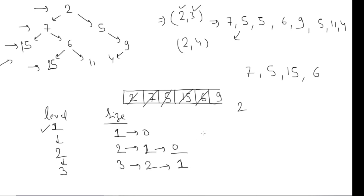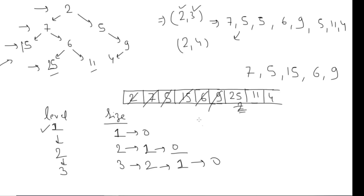Six has both left and right children, so I add twenty-five and eleven to the queue. Then I check nine — it's at a permissible level — I reduce the size, and nine has a left child so I add it to the queue. Now size is zero, so I increment the level. The new level is now greater than the maximum level of three, so I exit the iteration. After each level's size hits zero, I check if level exceeds the maximum level to break out.